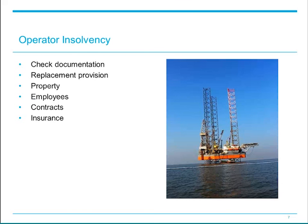Let's start with the insolvency of an operator. It's common for there to be an entitlement in the JOA to replace the operator on its insolvency. However, the JOA needs to be checked to ensure that it covers the specific insolvency event in question and the event actually does need to have occurred. Some of the older JOAs don't cover what is now known as out-of-court administrations, which are now the most common insolvency process, and some of those older JOAs are still in use in practice. It can therefore be unclear as to whether the removal right is enforceable in the relevant circumstances. The other point to note is that the insolvency of a parent company upon which an operator is dependent won't necessarily of itself trigger a default or replacement right under the JOA; in fact, it would be quite unusual for a JOA to provide for this.